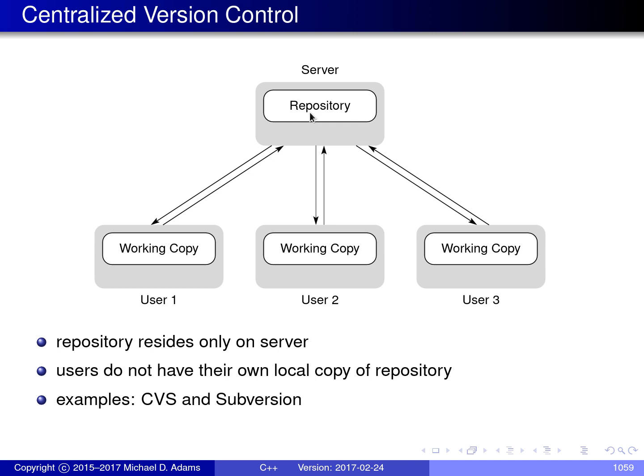The important thing to understand about the repository is that it contains all versions — everything is in the repository; it's the complete set of data. On the other hand, a working copy is just a specific version of some information with which a particular user is working. The working copy is typically a very small subset of the information contained in the repository, and usually it corresponds to one version of some software that a particular developer is working with.